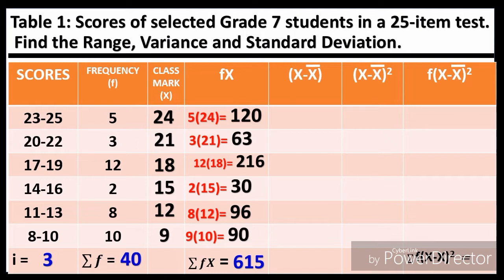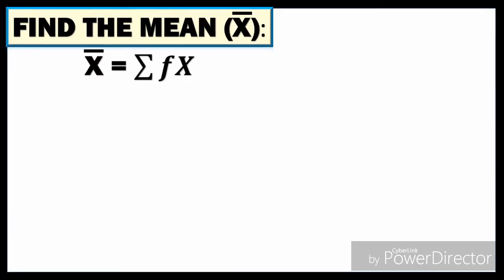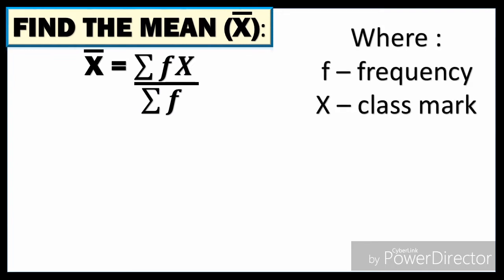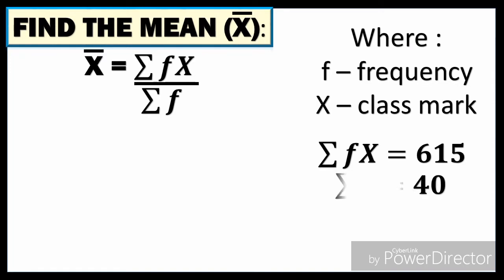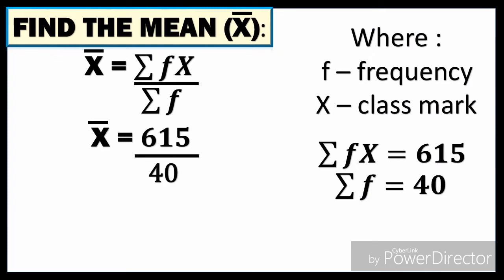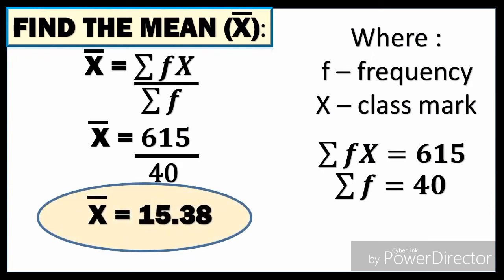For the next column, we subtract the mean from the class mark, so we need the mean first. The mean, or x̄, equals the summation of F·X divided by the summation of F, where F is the frequency and X is the class mark. The summation of F·X is 615 and the summation of F is 40, so x̄ = 615 ÷ 40 = 15.38.